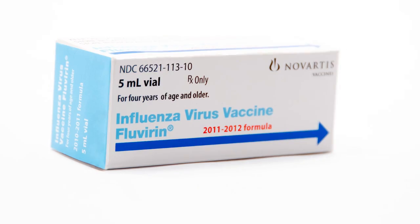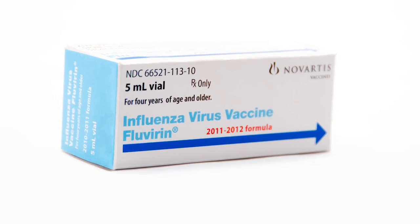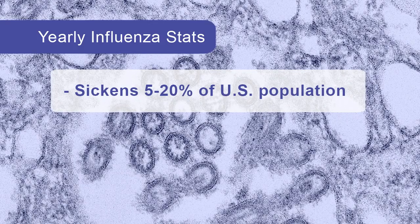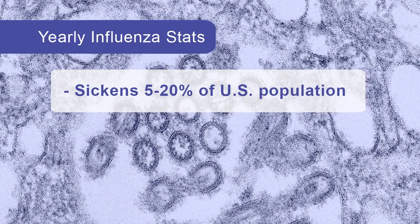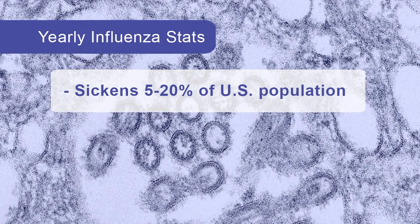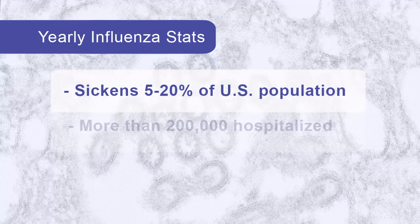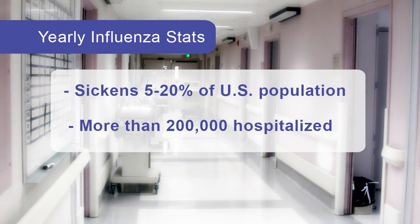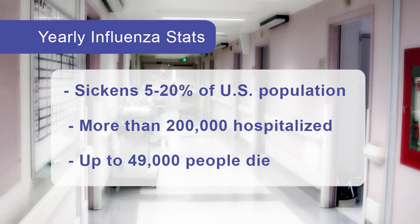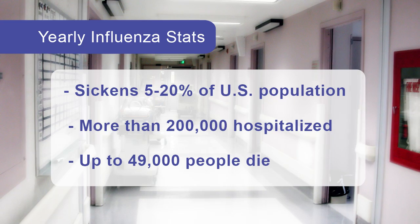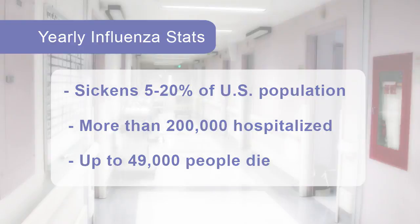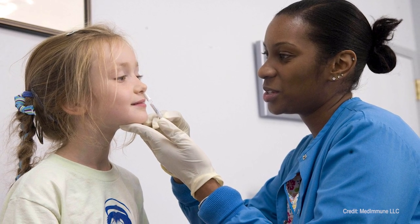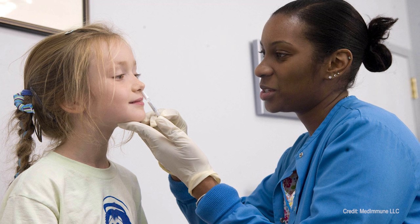Although there is an effective vaccine, not enough people choose to get it. As a result, influenza sickens between 5 and 20 percent of the U.S. population each year. More than 200,000 people may be hospitalized, and up to 49,000 people may die. That is why health officials recommend flu vaccination before every flu season.